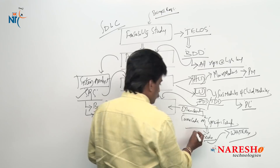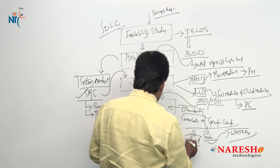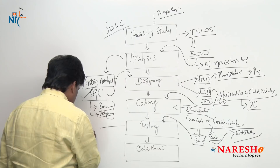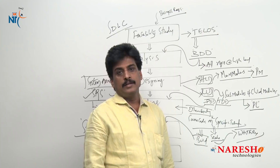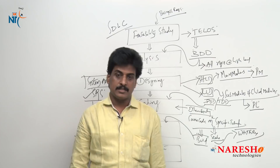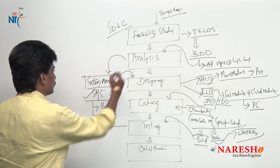From the coding phase, the output released is called a build. The build is input to the testing team, and on that build, a lifecycle is applied called STLC — Software Testing Life Cycle. It again has six phases: test planning, test designing, test execution, result analysis, bug tracking, and bug reporting. We will try to observe each of these six phases one by one.